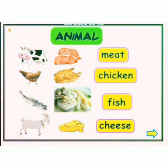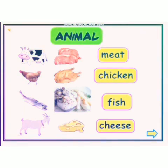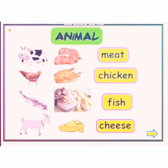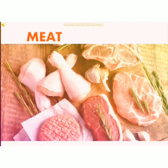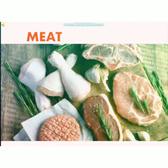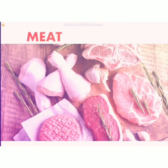From the picture we can see that from animals we get meat, chicken, fish, and even cheese. The food items that are obtained from animals include chicken, milk, and honey.